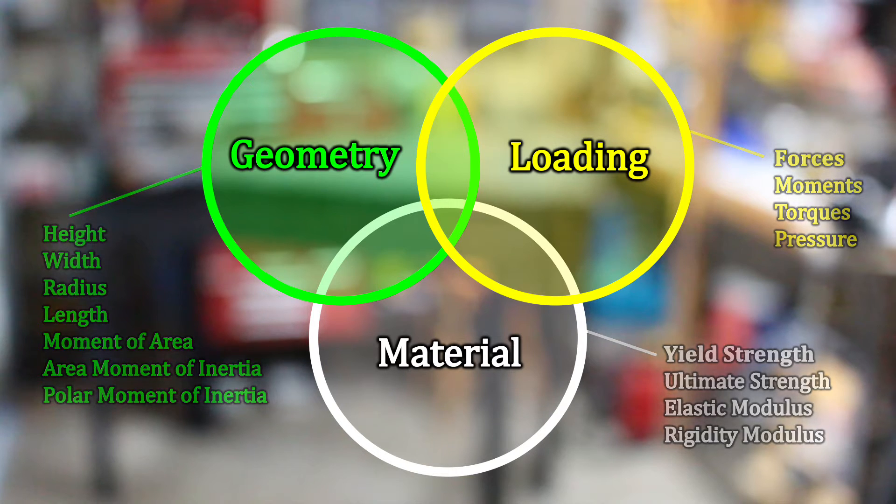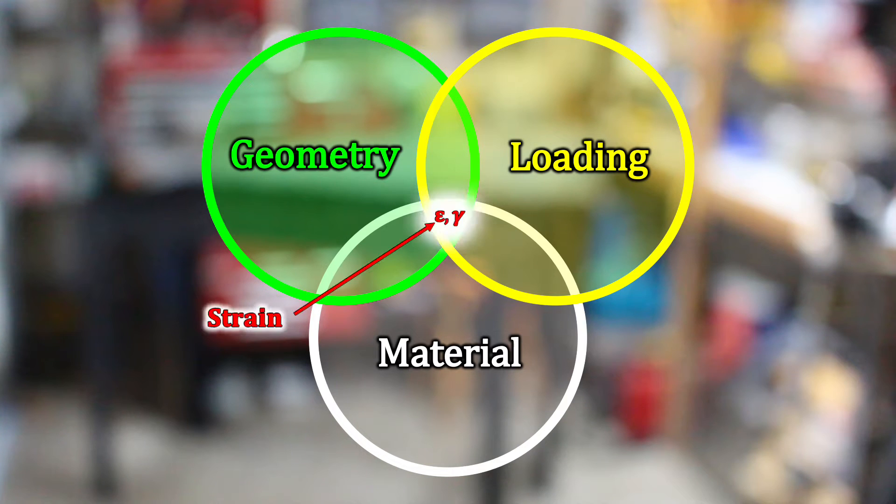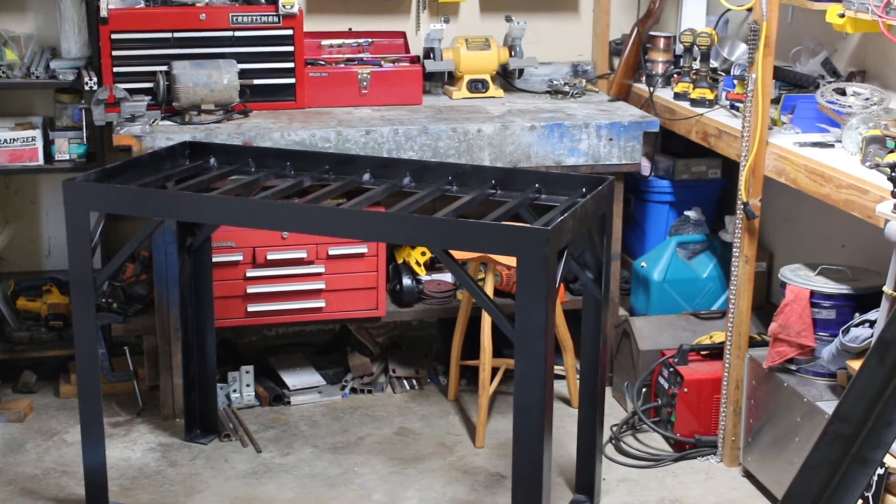These three sets of measures can be related through a metric like strain or factor of safety, in the same way that geometry and loading are related through stress, independent of material. And today we'll analyze a simple table frame.